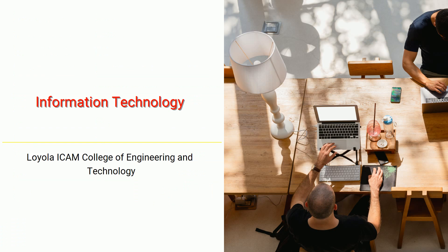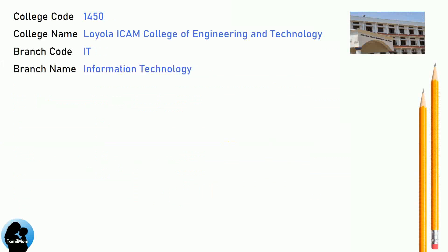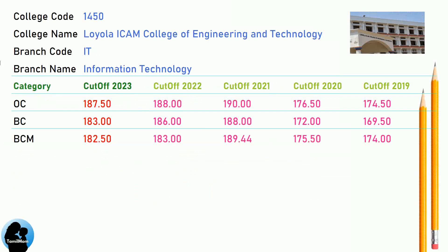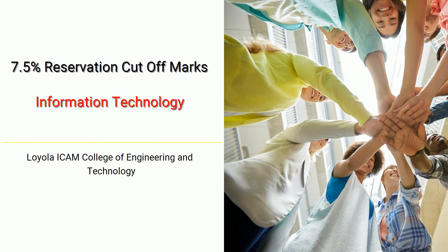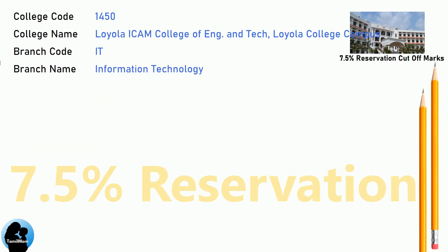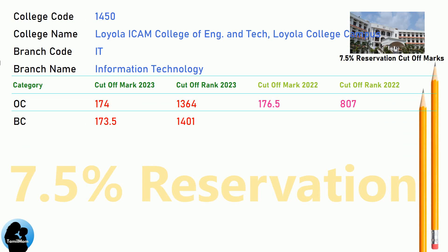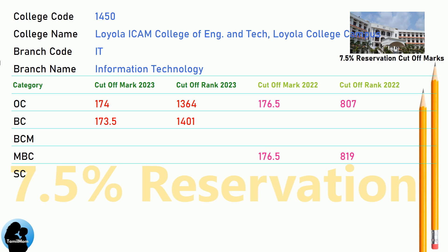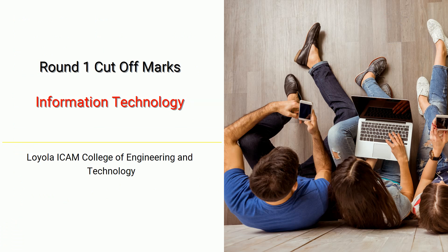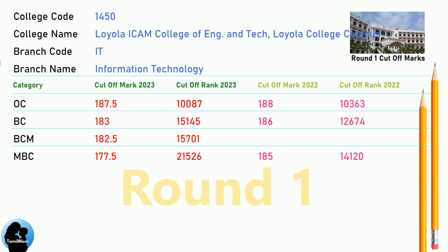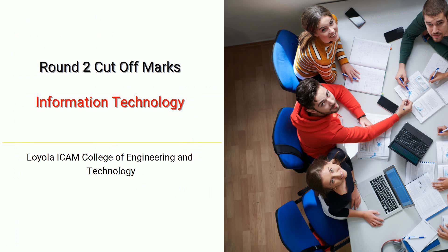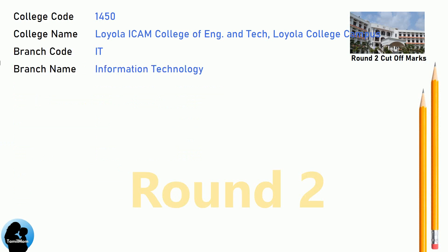DNA cutoff and DNA 7.5 reservation cutoff for Loyola ICOM College of Engineering and Technology in Information Technology. DNA Round Two cutoff for Loyola ICOM College of Engineering and Technology in Information Technology.